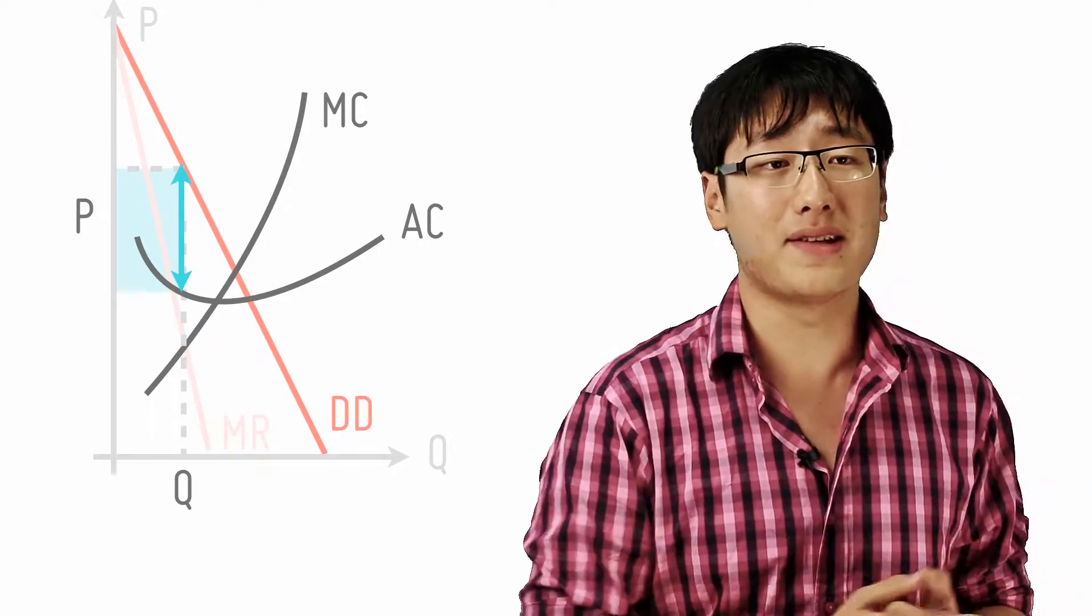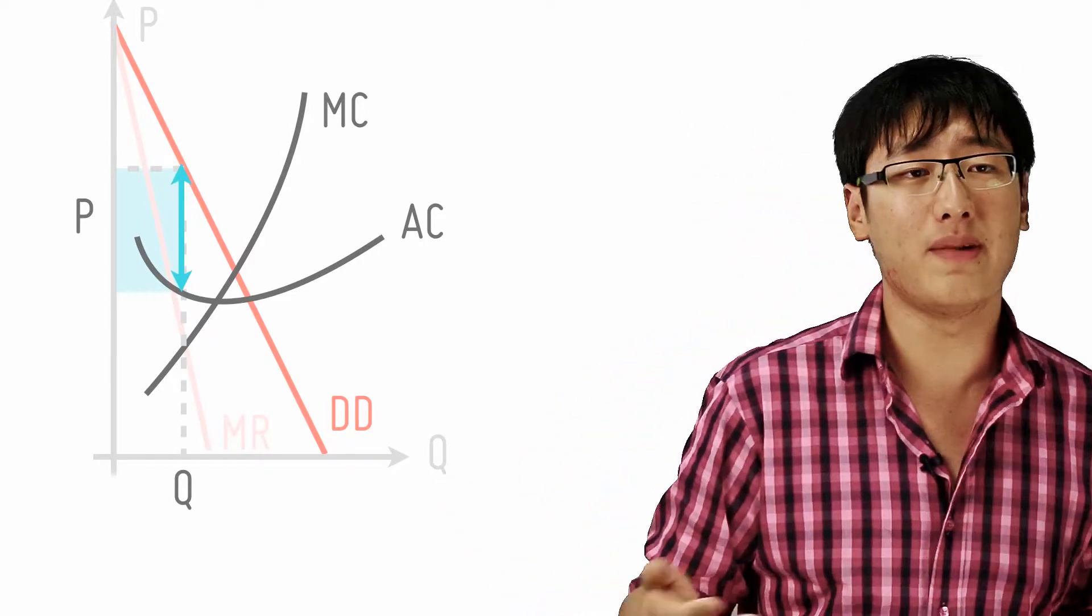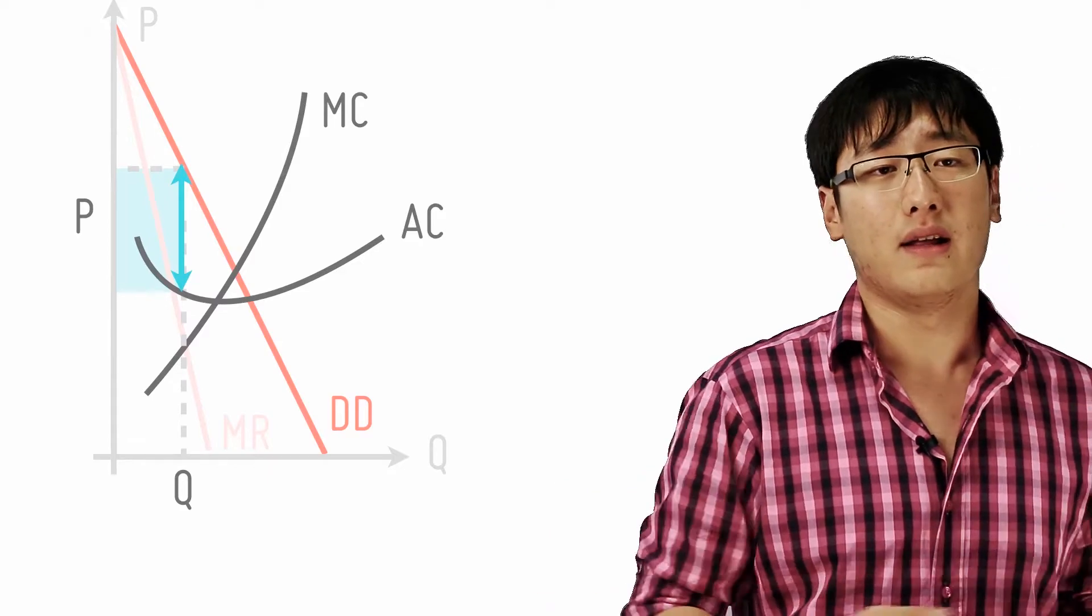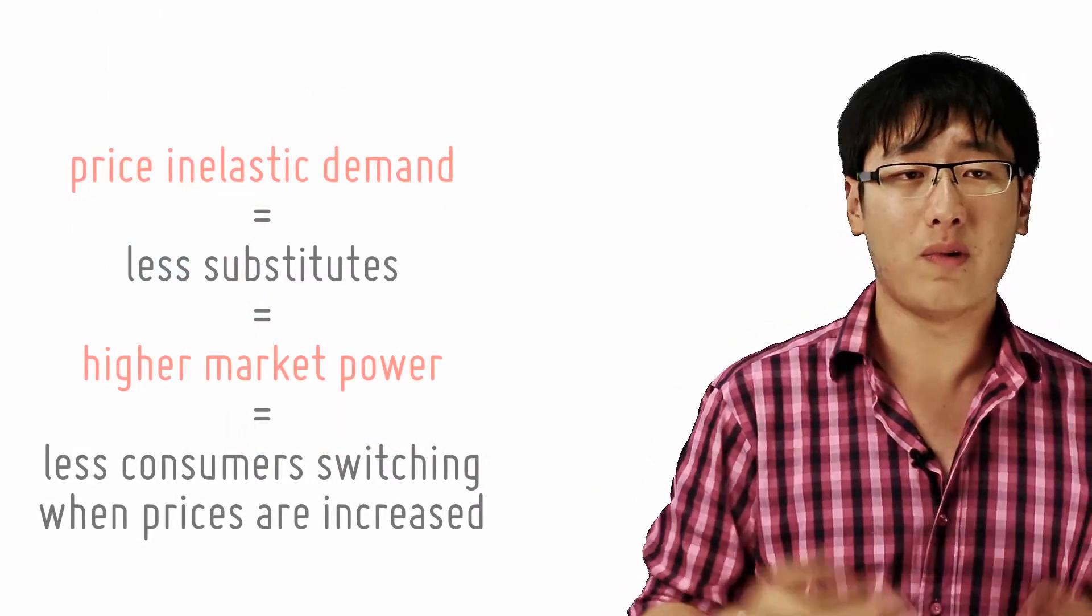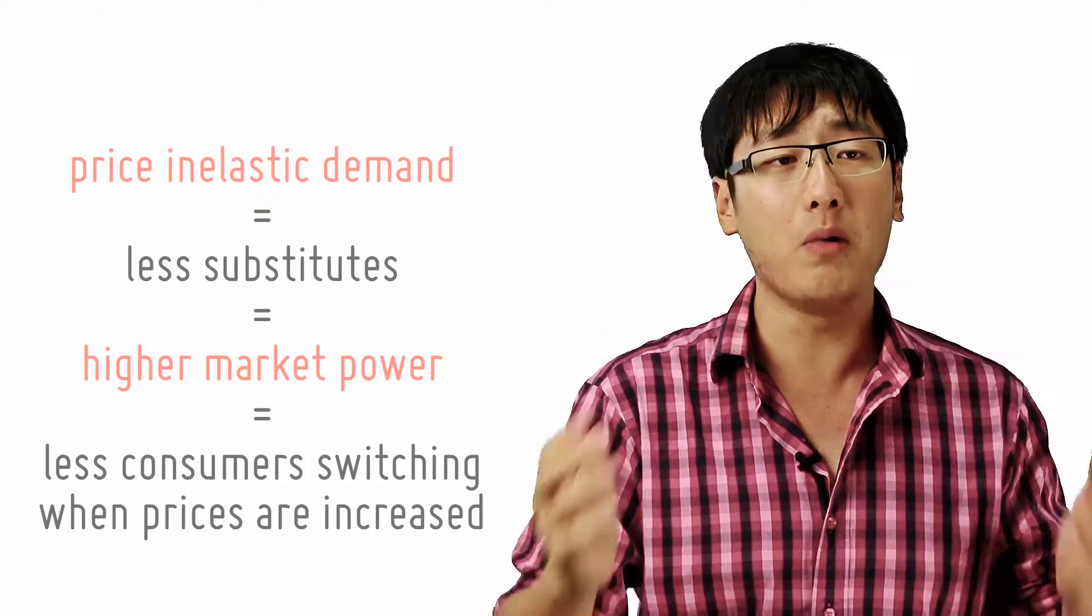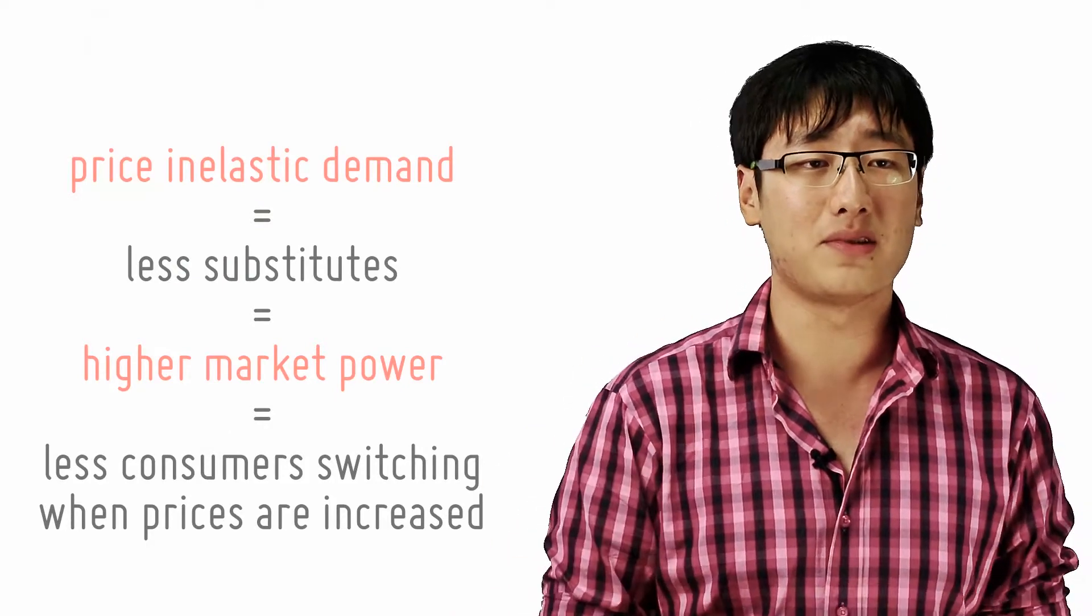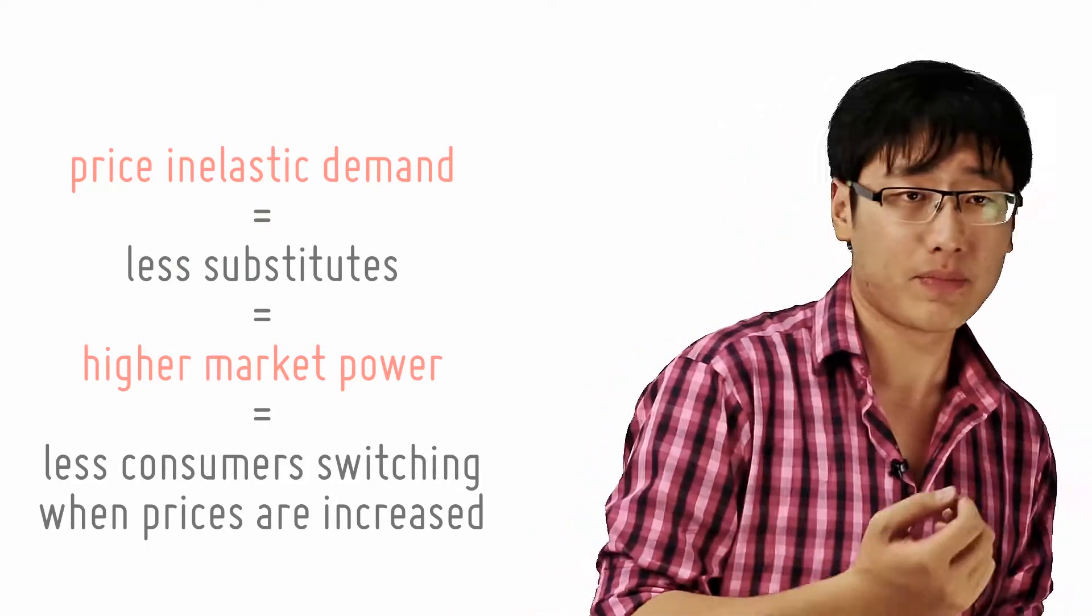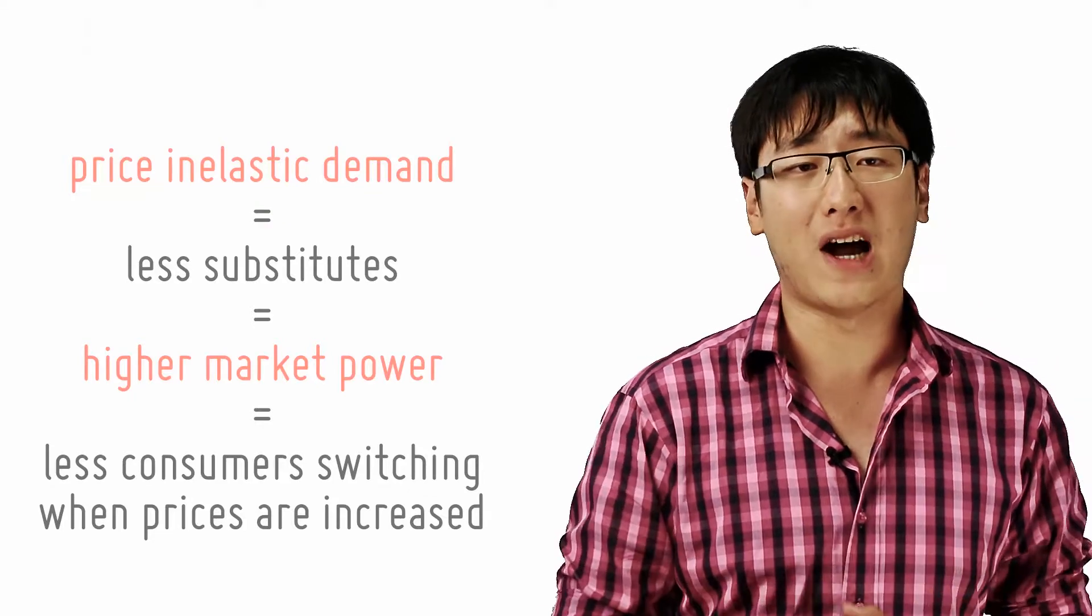But commonsensically, when does that happen? Well, it happens when the firm has a more price inelastic demand curve. So when it has less substitutes. So it happens when the firm has more market power. So due to the lack of substitutes, less consumers will switch away from the monopoly when the price increase happens.